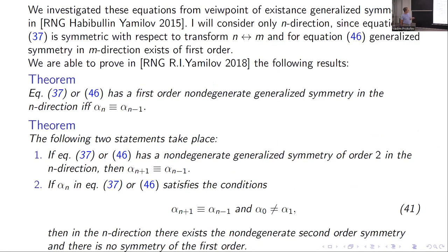And we investigate this whole situation in the article with Habibullin and Newton. We are able to prove, not in this article but in the same article, the following result: the first order symmetry in the n direction exists if and only if the function pi_n is a constant.